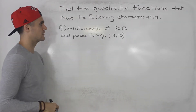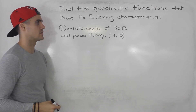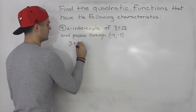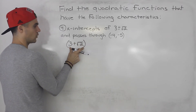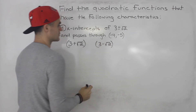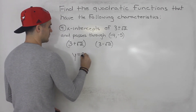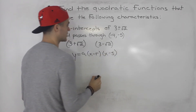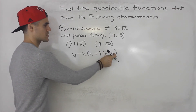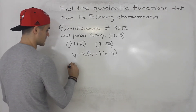Finally, question four: x-intercepts of three plus or minus root two, passing through (negative four, negative five). The two x-intercepts are (3 + √2) and (3 - √2). We put it in factored form: y = a · [x - (3 + √2)][x - (3 - √2)]. Make sure the intercepts are in brackets so you can distribute the negative inside each bracket.